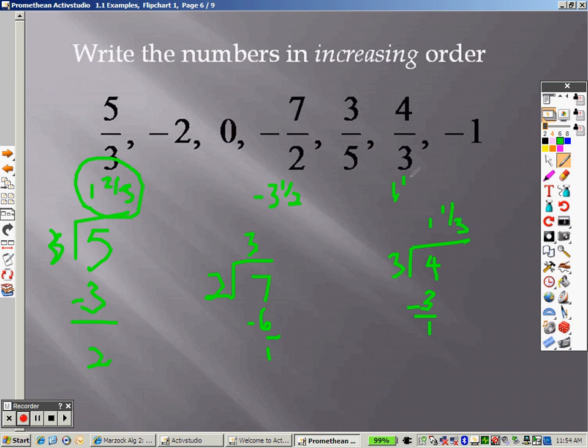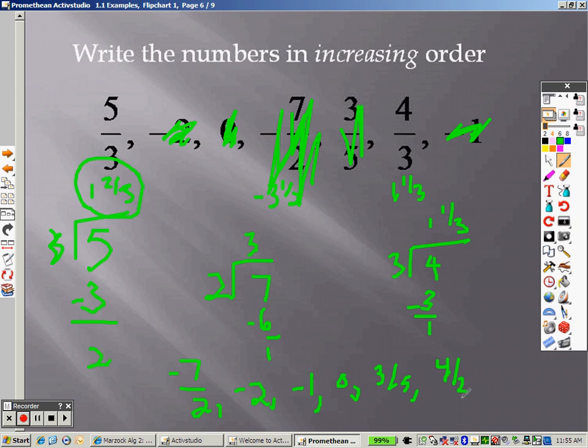So that's 1 and 1 third. When I go to write these in order, I take the lowest number, and the lowest negative I happen to have is that one right there, so it would be negative 7 halves. That's the lowest negative I have. Then the next lowest negative is negative 2. Then the next lowest negative I have is negative 1. Then 0. These fractions are both greater than 1, so that means this fraction, which is not greater than 1, needs to be next. And then I'd write this, since it's 1 and 2 thirds, and that's 1 and 1 third. 4 thirds would come first, and then the 5 thirds, and there is everything in increasing order.